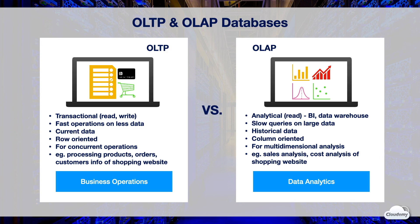Most OLAP databases have column-oriented datastore architectures, optimized for multidimensional data queries, where you need to aggregate information from many columns across different tables or data stores. For example, you might want to extract sales information for different departments and summarize them in the same report, or use business intelligence software to analyze buying patterns between customer groups and popular products.